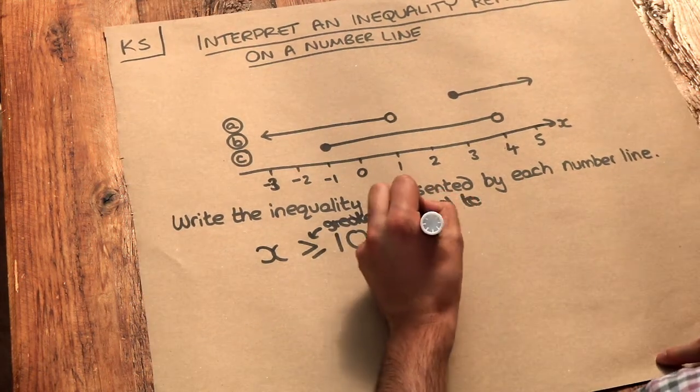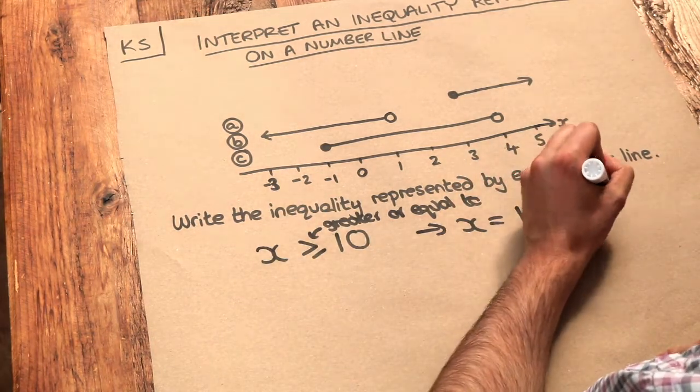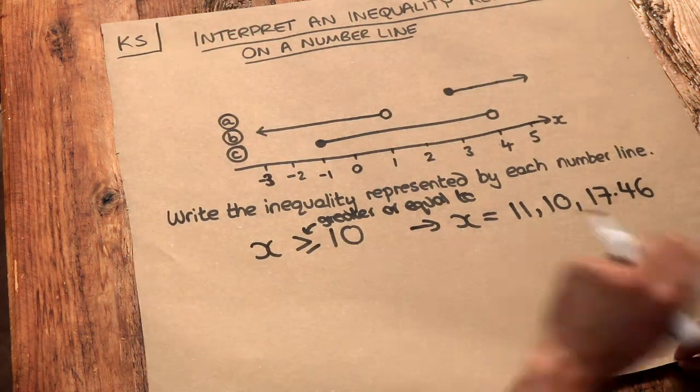So therefore x, for example, could be 11, it could be 10 itself, it could be 17.46. It can be any number that is either greater than 10 or equal to 10.